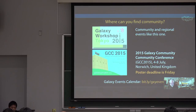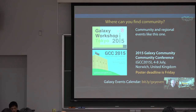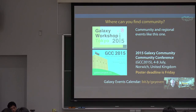We also have the 2015 Galaxy Community Conference, which is being held in July in Norwich in the United Kingdom. Registration opened today, so we're very happy about that. The poster deadline is Friday, so if you're interested in presenting a poster, please submit it by Friday. You can also submit a late oral presentation abstract, and we will consider those as we have cancellations. The online events calendar is at that URL — hundreds of events per year, so a lot of stuff going on around the world.